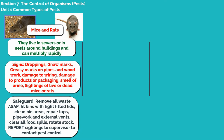In order to safeguard, you should remove all waste as soon as possible, fit bins with tight fitted lids, clean bin areas, repair taps, pipe work and external vents, clear all food spills, rotate stock and report sightings to a supervisor to contact pest control.